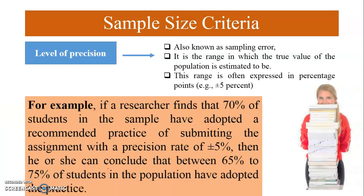For example, if a researcher finds that 70% of students in the sample have adopted a recommended practice of submitting assignments, with a precision rate of plus or minus 5%, then the researcher can conclude that between 65% and 75% of students in the population have adopted the practice. This is the interpretation of level of precision, also known as the margin of error.